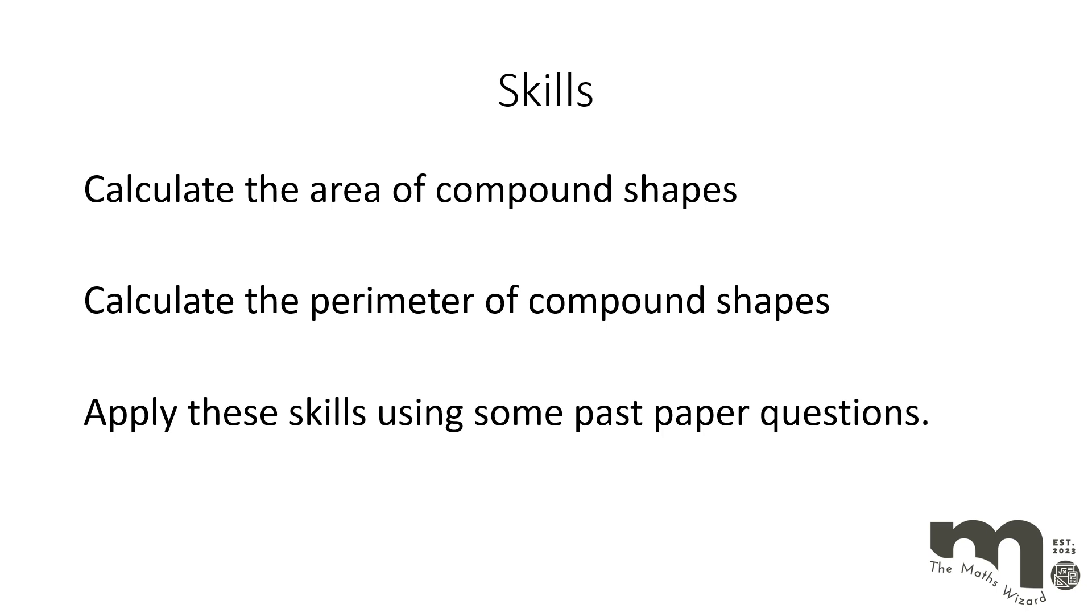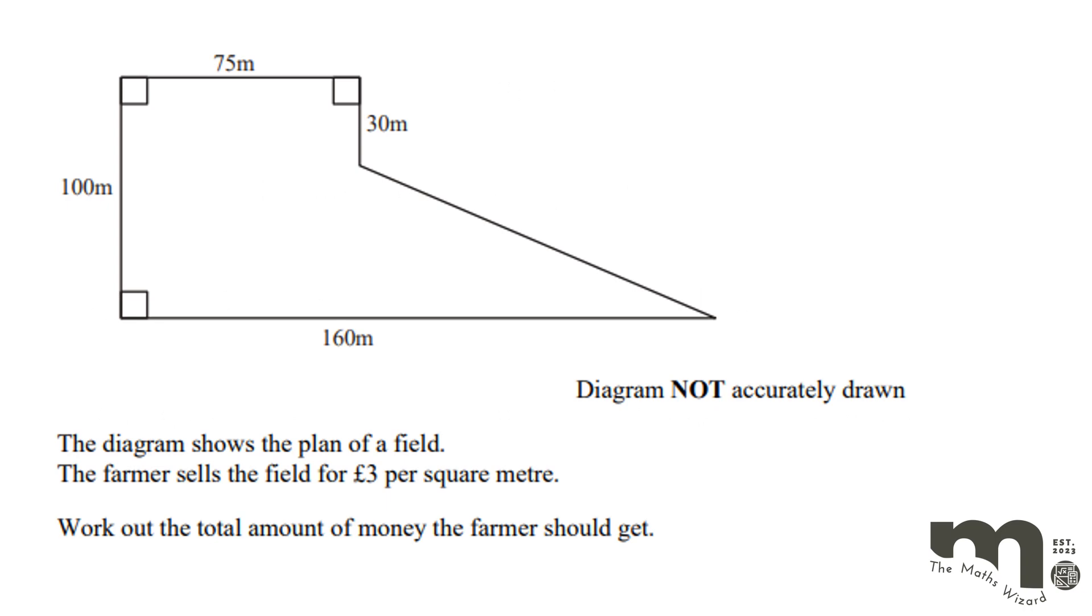Okay so we're now going to take a look at just a couple of past paper questions. I think these are from some Edexcel papers, so we'll have a look at a couple of those before the end of this video. Okay so first one then. So we've got a nice context based question here, so it says this diagram shows the plan of a field. The farmer sells the field for three pounds per square meter. Work out the total amount of money that the farmer should get. So we've not only got to do our area here, we've got to do something with that area.